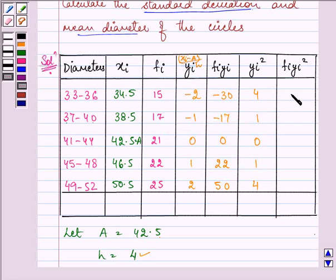1 and again 4. And then 15 into 4, 60, 17 into 1, 17, 21 into 0, 0, 22 into 1, 22, 25 into 4, giving us 100.